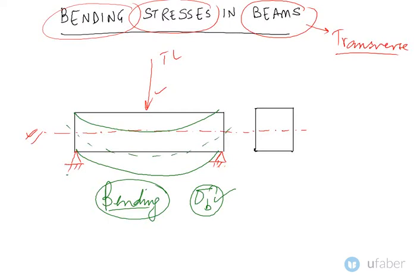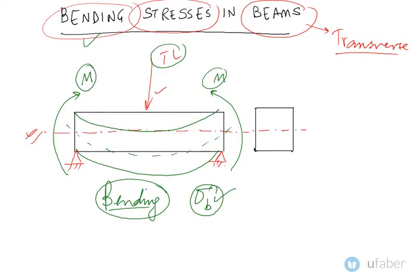You can also imagine that this beam can be bent by applying a couple in this direction. This couple is called bending moment. So a transverse load can bring about bending and a bending moment acting in this direction as a couple can also bring about bending of a beam.